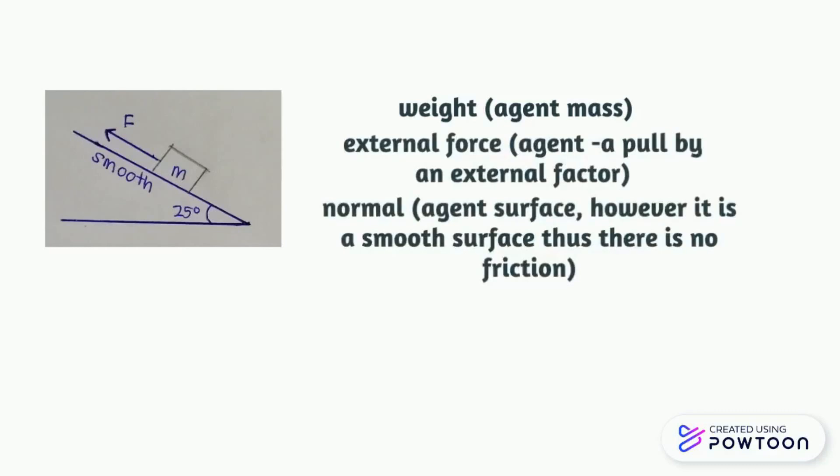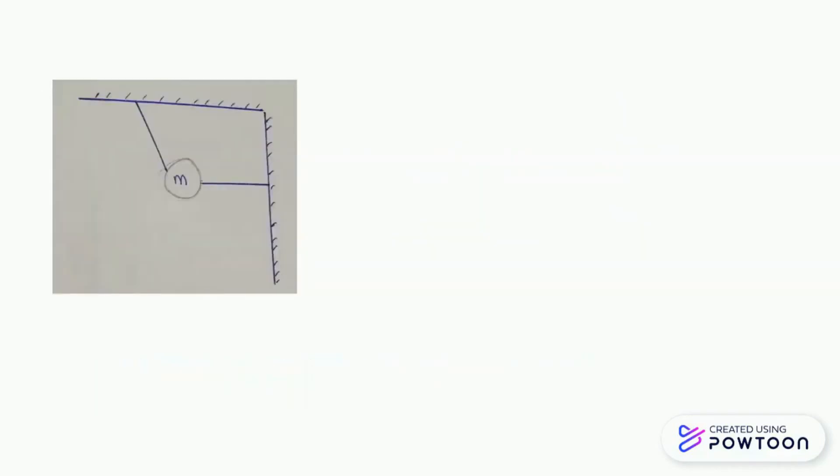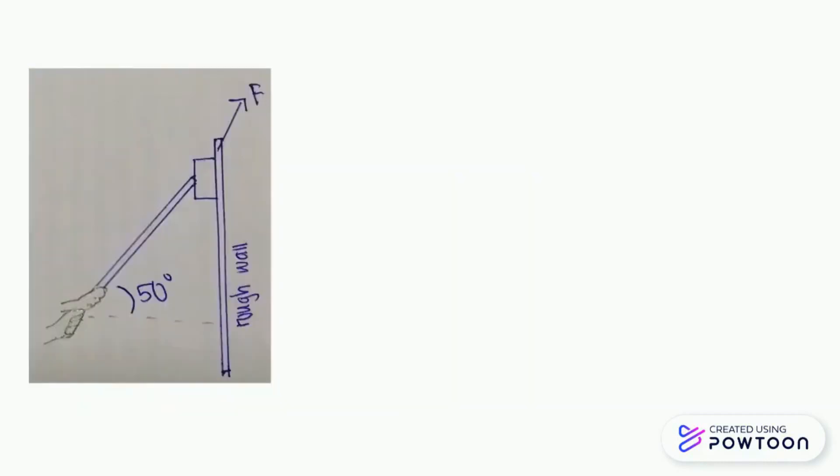The object is hung to a wall using two strings. The object has the mass, thus it leads to weight force. It is hung using strings. The string here leads to the presence of tension. Both strings have the tensional force.